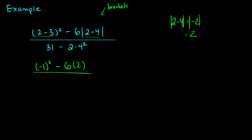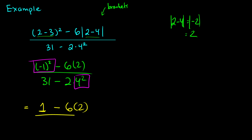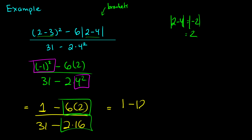So we have minus 6 times 2. On the bottom we have 31 minus 2 times 4 squared. Next we handle exponents: negative 1 squared is negative 1 times negative 1 — two negatives make a positive — so that's 1. We subtract 6 times 2. On the bottom, 4 squared is 16, so we have 31 minus 2 times 16. Now we do multiplication: 6 times 2 is 12, giving 1 minus 12 on top. 2 times 16 is 32, giving 31 minus 32 on the bottom.